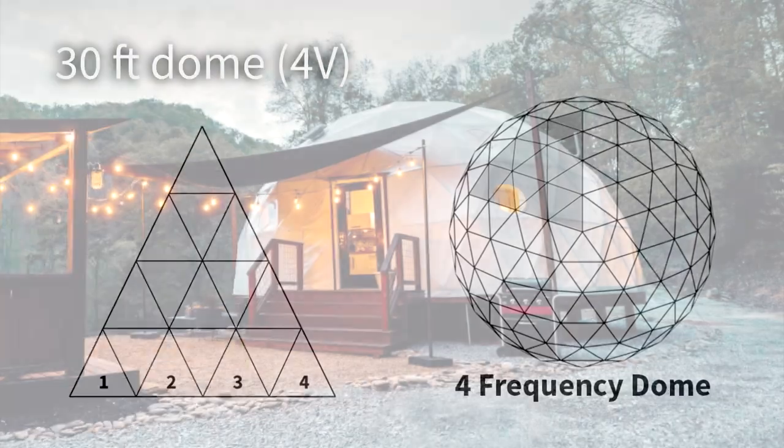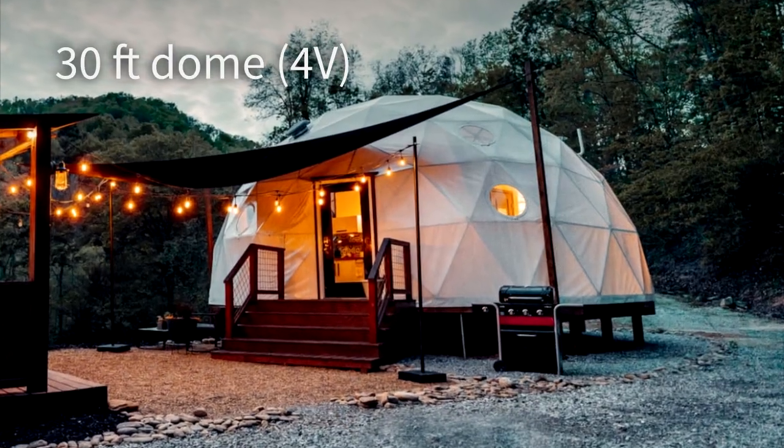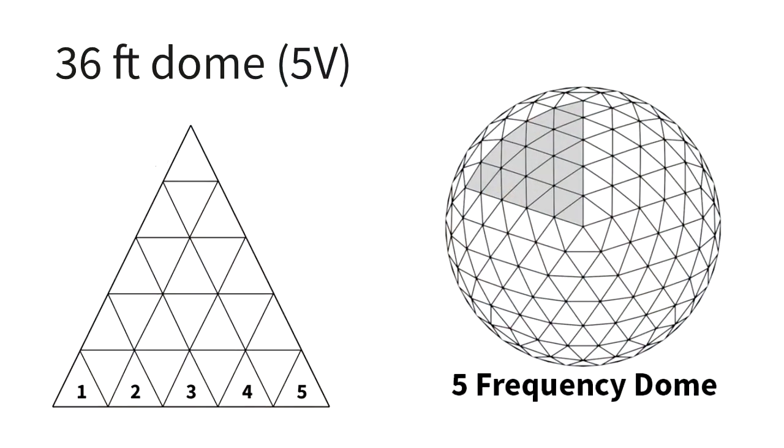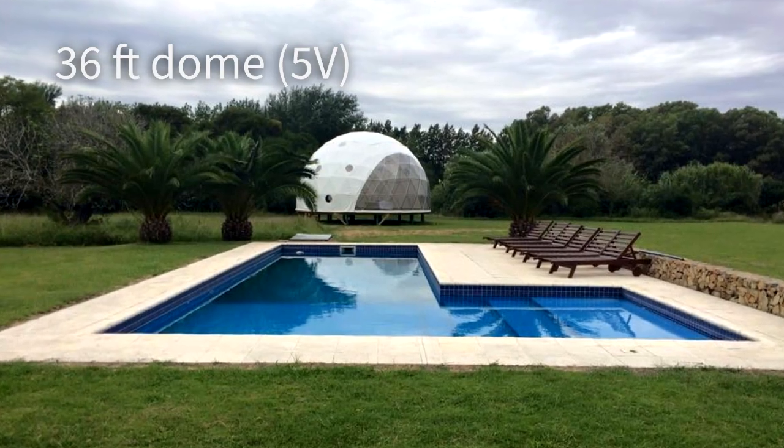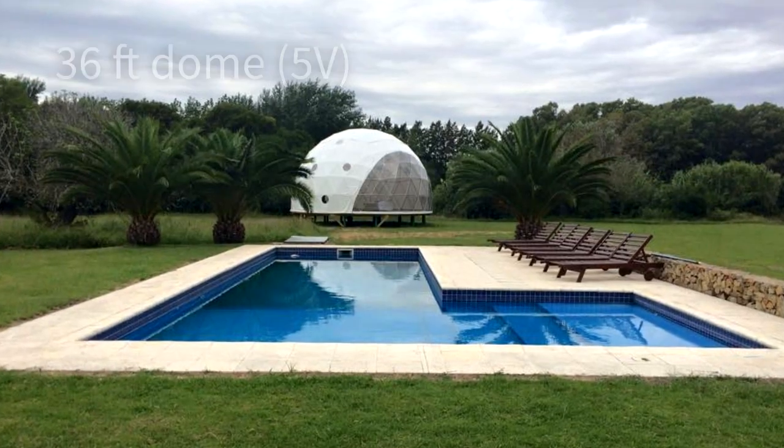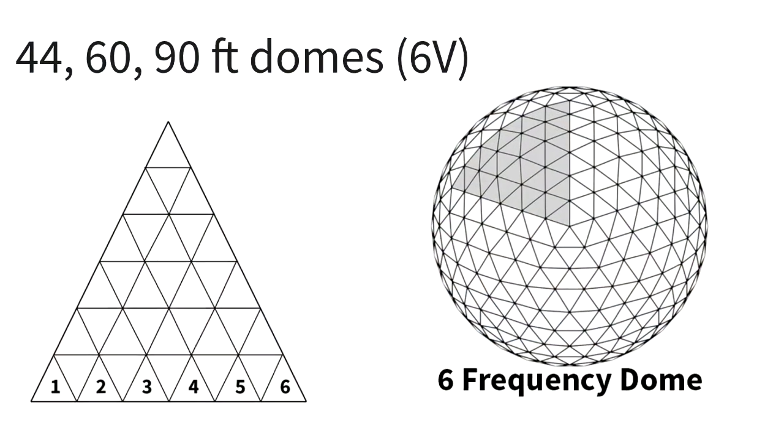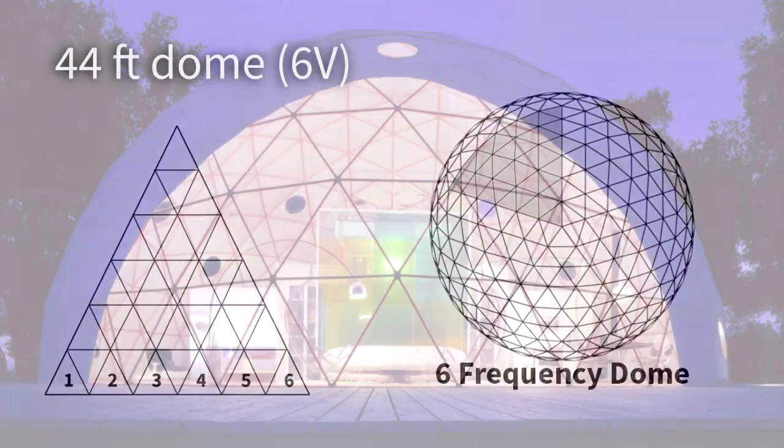Our 30 foot dome is a four frequency hemisphere. Our 36 foot dome is a five frequency 5/8 sphere. Our 44 through 90 foot domes are six frequency hemispheres.